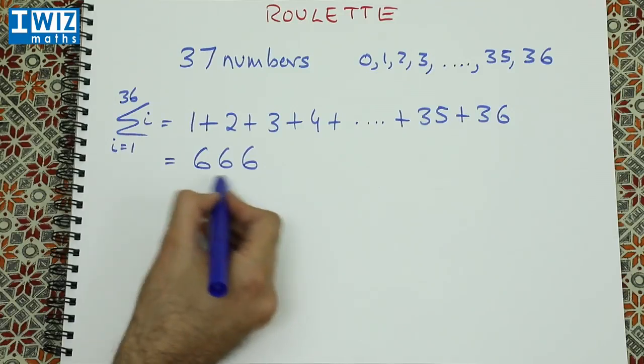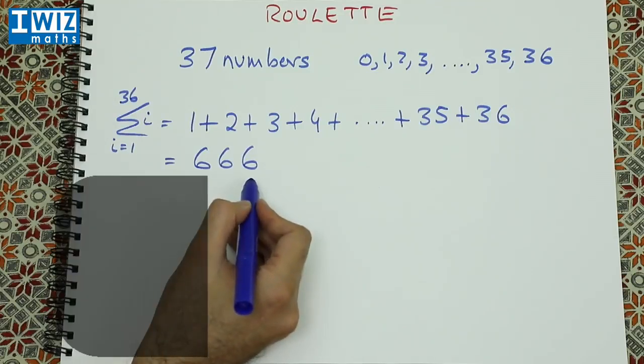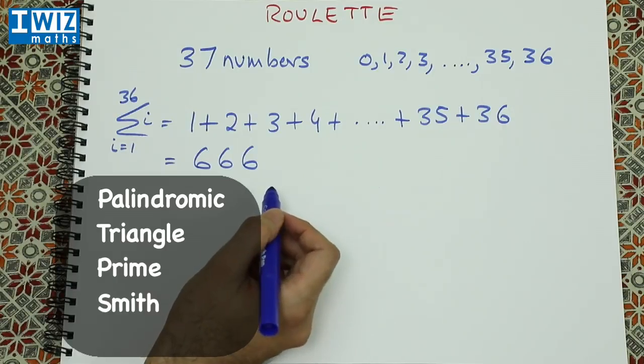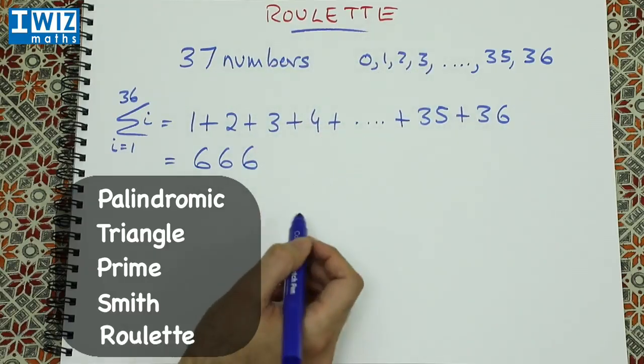So we see that this number 666 has connections with palindromic numbers, triangle numbers, prime numbers, the Smith number, and last but not least, with the roulette wheel. So it's clearly a more exciting number than we initially thought.